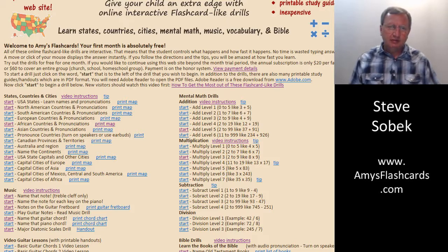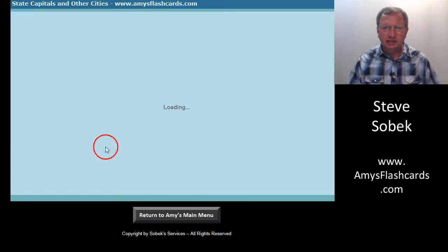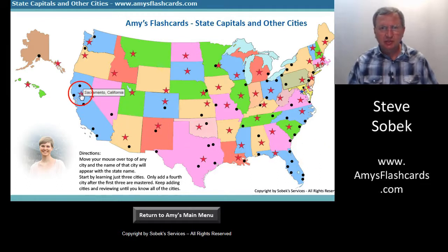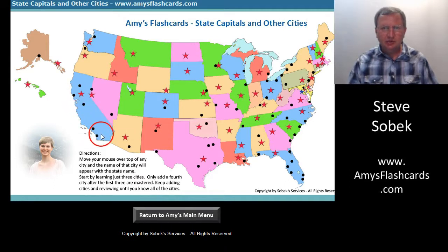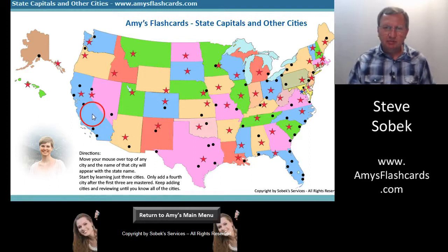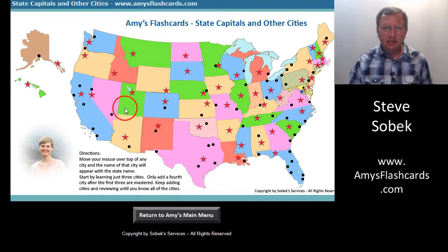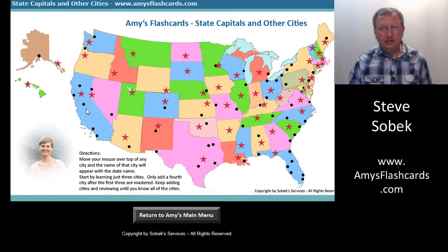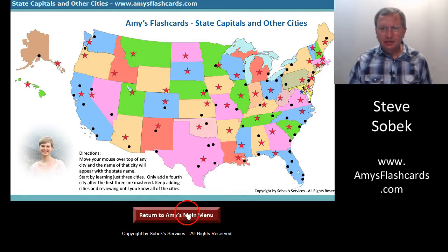If you use these, you will learn the countries of Africa and the states of the United States, including the capitals. My city drill for the United States doesn't include just capitals — it also includes other important cities. So beyond knowing Sacramento is the capital of California, you also learn San Francisco, Los Angeles, and San Diego. The red stars are the capitals, but it's important to know many of the other large cities too. In the city drills, instead of clicking a tiny dot, you just mouse over the city and you'll see the city name and state. Returning back to the home page.